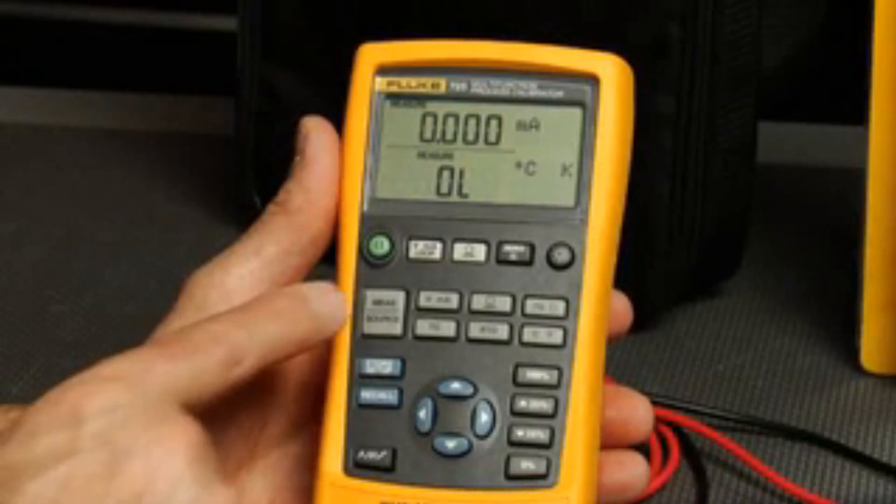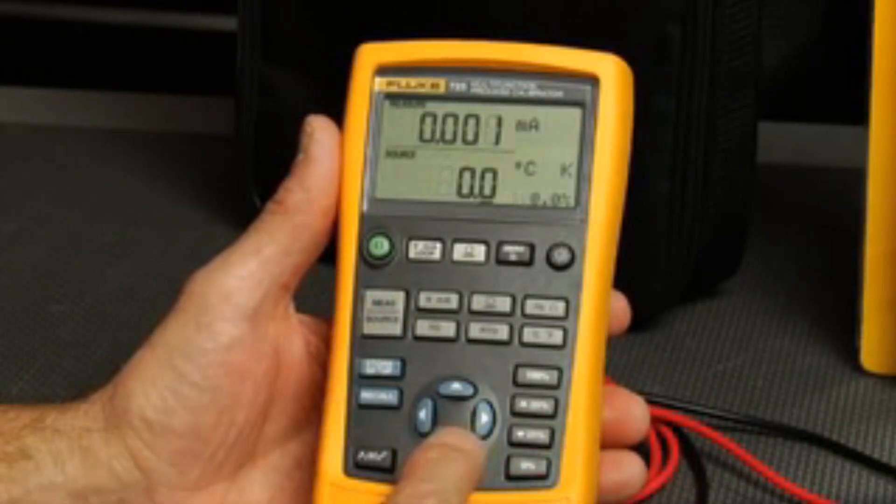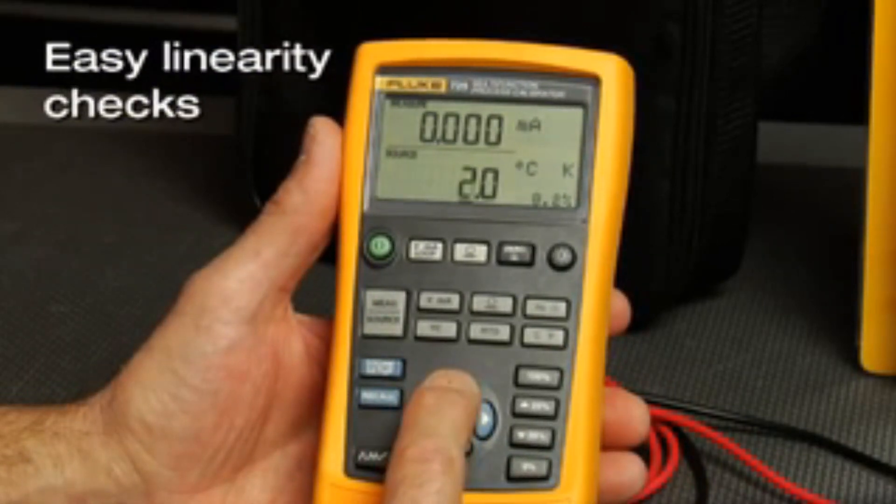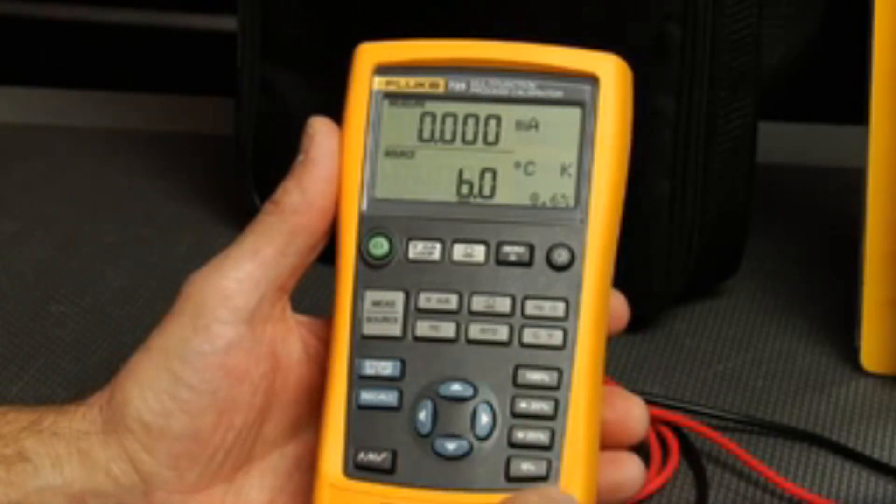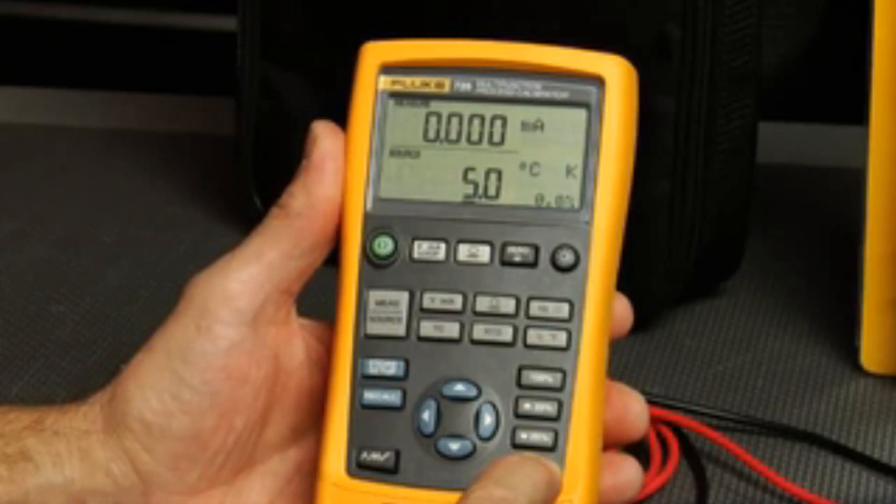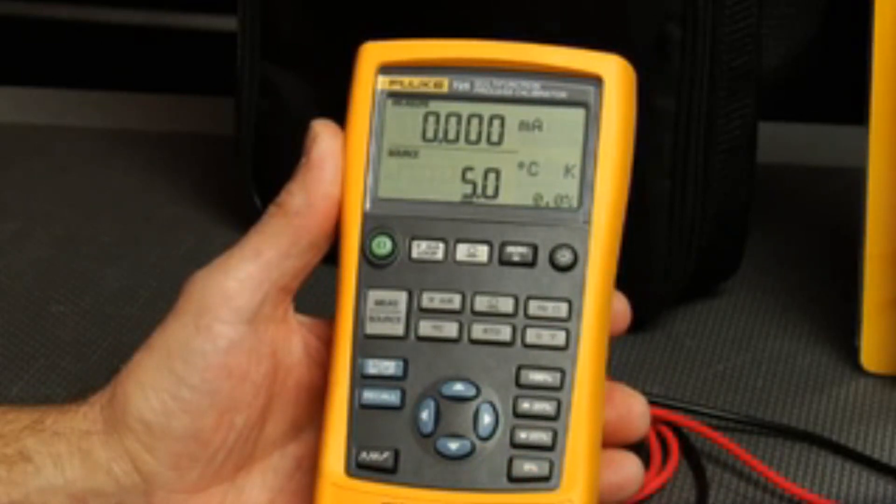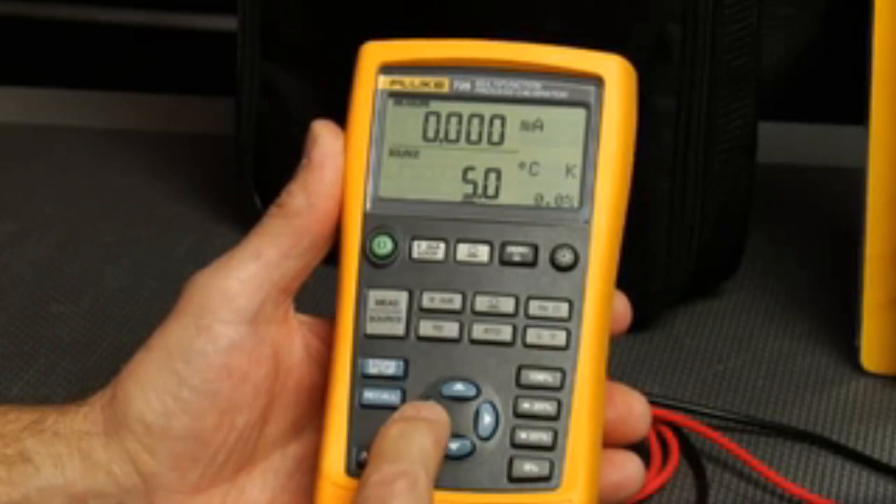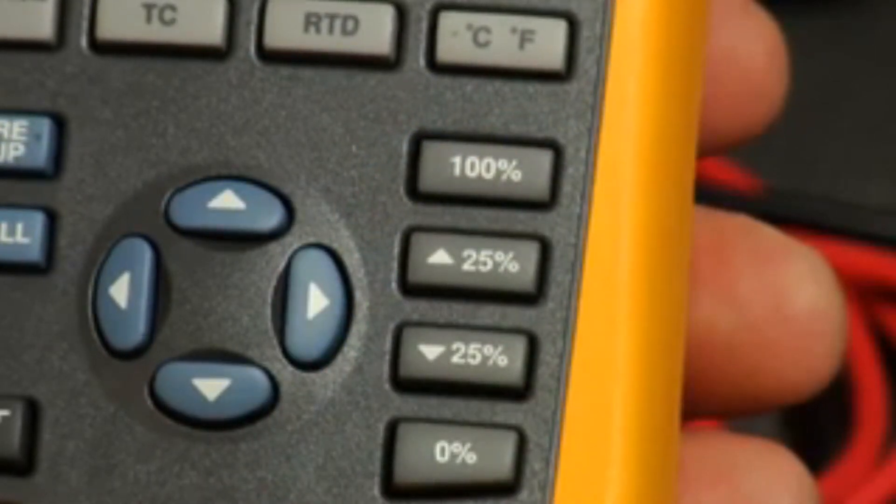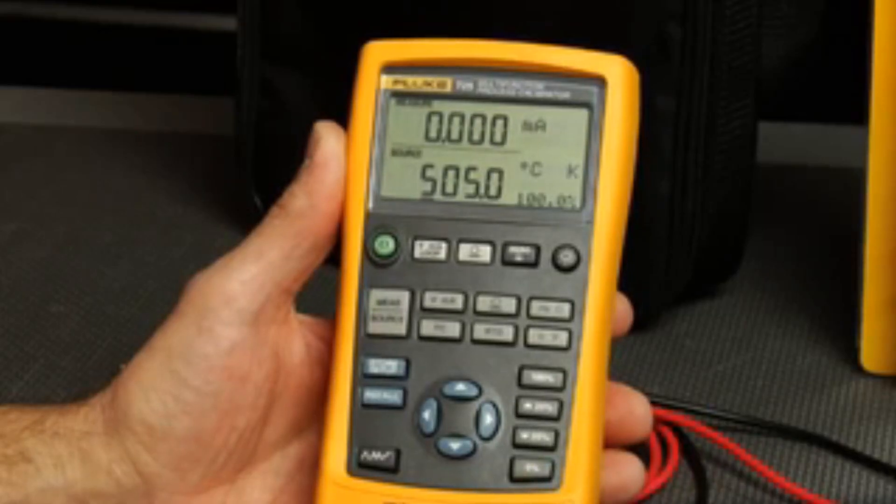You can set the 725 up with zero and span settings to coincide with the transmitter you are testing for easy linearity checks. To do so, first set the calibrator to source the desired 0% output value, then press and hold the 0% button until the display flashes. The 725 is now ready to test a transmitter, and you can use the 25% step buttons to change the output and test for measured milliamp linearity.